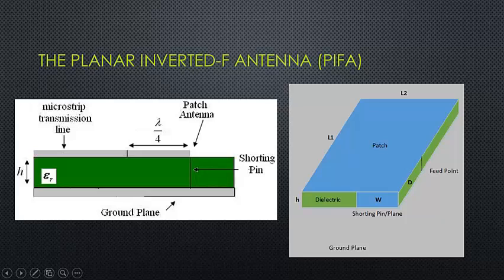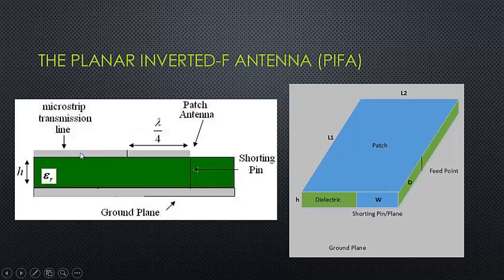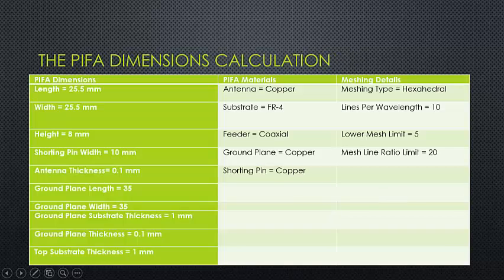The planar inverted F antenna is what we are supposed to design. On the left picture you'll see a basic diagram showing it from one angle. It's simply a microstrip antenna on top, a substrate in the middle, and a ground plane at the bottom. There's a small shorting pin connecting the ground plane to the patch antenna on top. Our initial specification was 25.5mm length and width with a height of 8mm and a shorting pin width of 10mm.